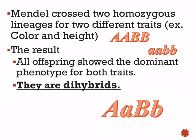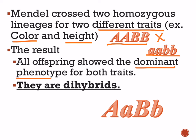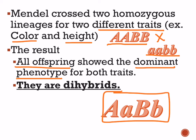Mendel crossed two homozygous lineages for two different traits — for instance, color of peas and height of the plants. He crossed homozygous dominant with homozygous recessive, and in the result all offspring showed the dominant phenotype. Their genotype — which we now know — made them dihybrids, because they are hybrid for two traits. This dihybrid cross helps us understand Mendel's law of independent assortment.